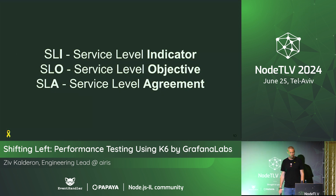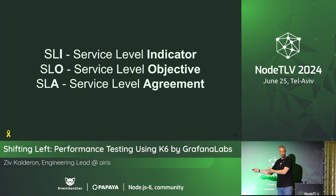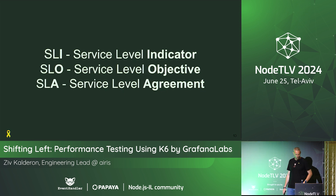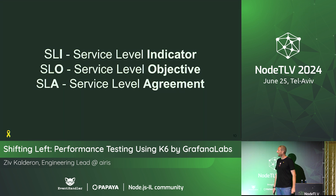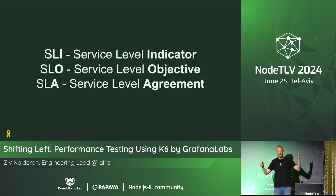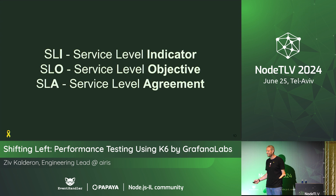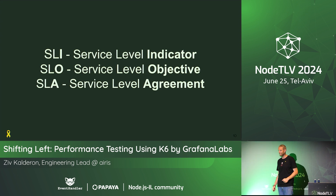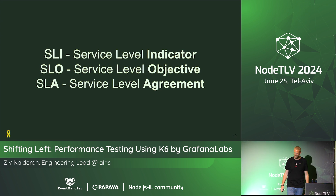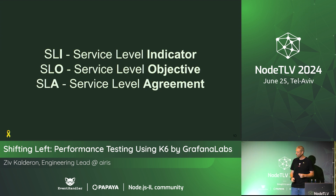Three more terms that are really important: SLI, SLO, and SLA. SLI — Service Level Indicator — is how we measure our performance. SLO — Service Level Objective — is basically what we're committing to. And SLA — Service Level Agreement — is what we publish to our customers: for example, 'we have 99.9% uptime.'